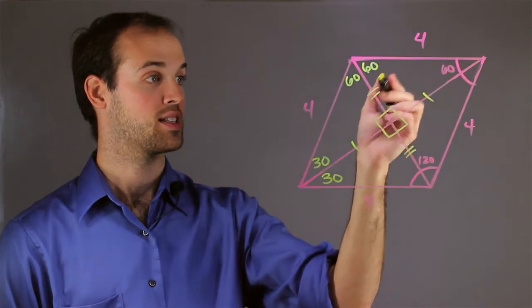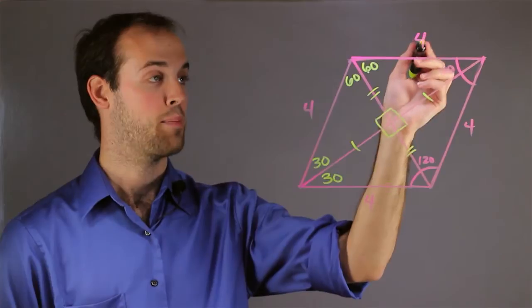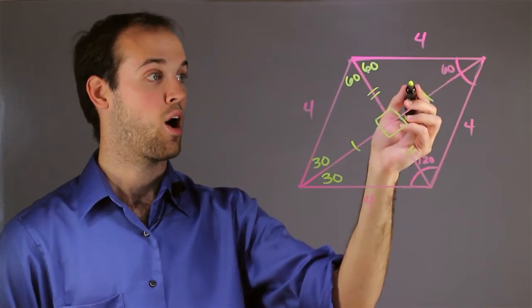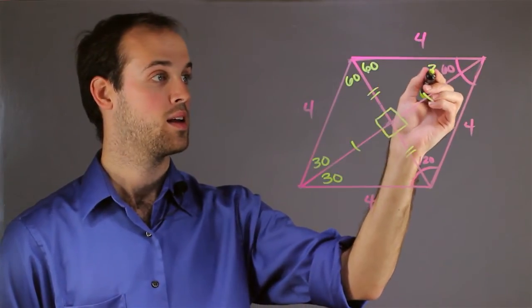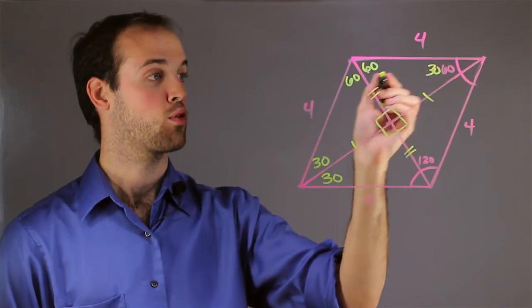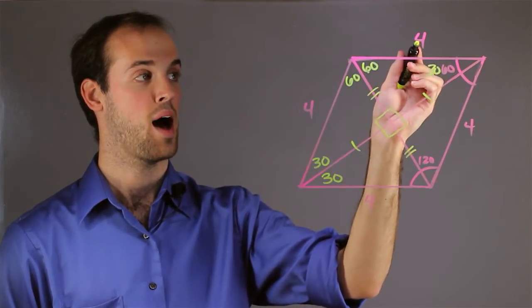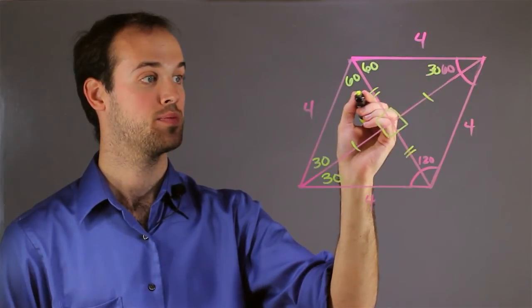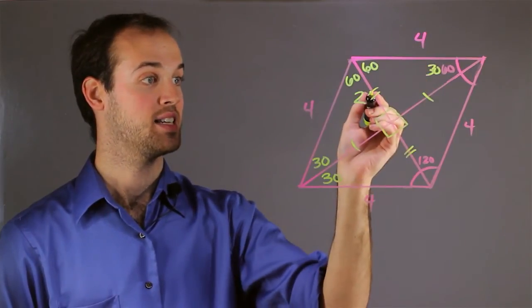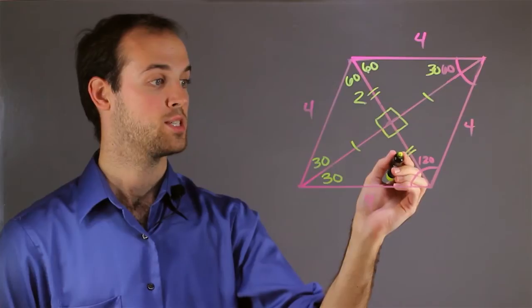For example, let's look at this top triangle. I know that the hypotenuse is 4, and I also know that the side across from the 30 degree angle is equal to half the length of the hypotenuse, which means that it's 2. And since this side is congruent to this side, this must also be 2.